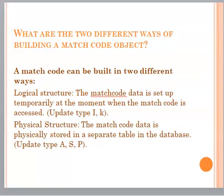What are the two different ways of building a match code object? A match code can be built in two different ways. Logical structure: The match code data is set up temporarily at the moment when the match code is accessed (update type I or K). Physical structure: The match code data is physically stored in a separate table in the database (update types A, S, or P).